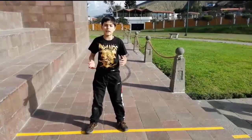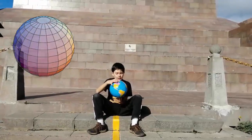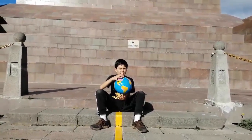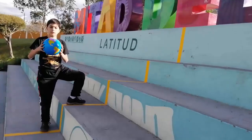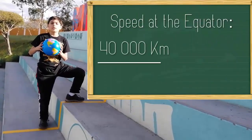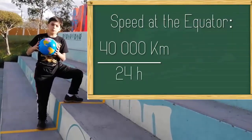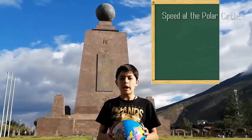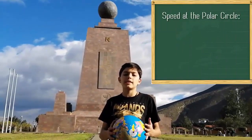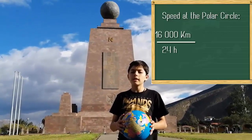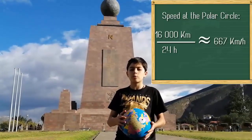While I'm here, let's check some Earth facts. Earth is a sphere, rotating from west to east, and the equator travels faster than the poles. The circumference of the equator is around 40,000 kilometers, so in 24 hours its speed is approximately 1,600 kilometers per hour. Meanwhile, in the polar circle, the circumference is only 16,000 kilometers, so in the same 24 hours the speed is only 667 kilometers per hour.